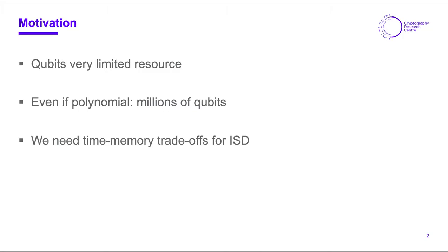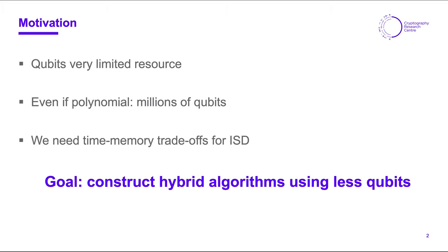This is the case for information set decoding algorithms, which are the tool in assessing the security of code-based systems. Hence we need time-memory trade-offs for these ISD algorithms to already leverage the availability of small quantum computing devices. The goal of this talk is to construct hybrid algorithms which work with a classical coprocessor invoking a quantum algorithm, where the quantum algorithm uses less memory than the full quantum version would, but this comes at the price of increased time complexity.